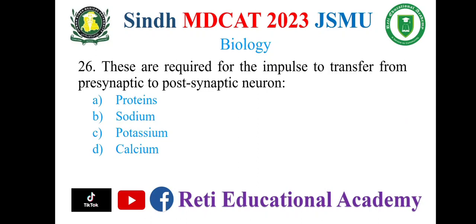These are required for the impulse to transfer from presynaptic to post-synaptic neuron. A. Proteins, B. Sodium, C. Potassium, D. Calcium. The correct option is A. Proteins. Question number 27.